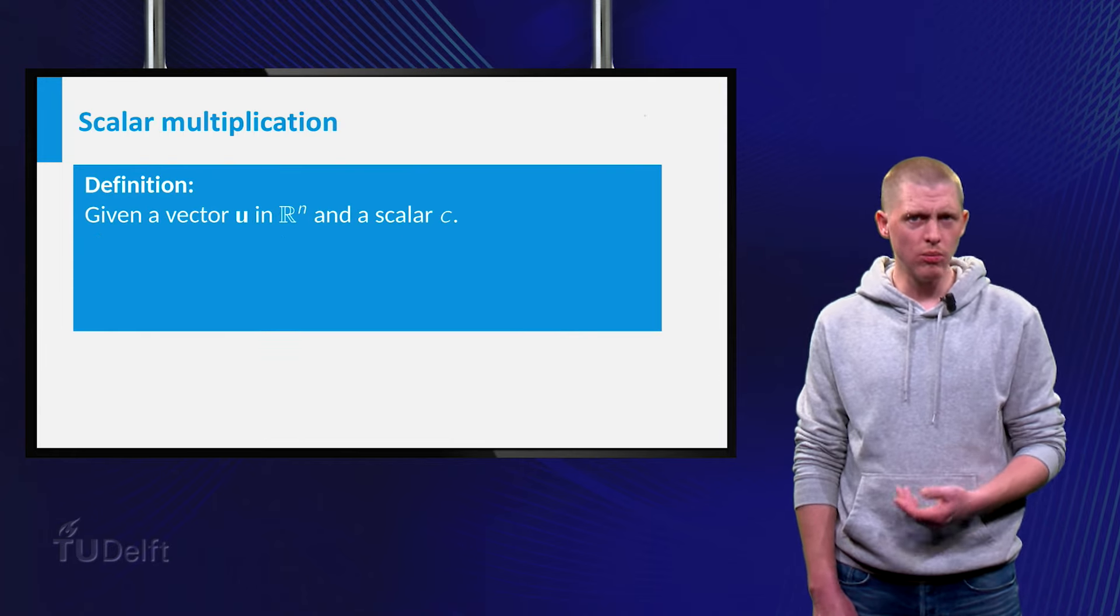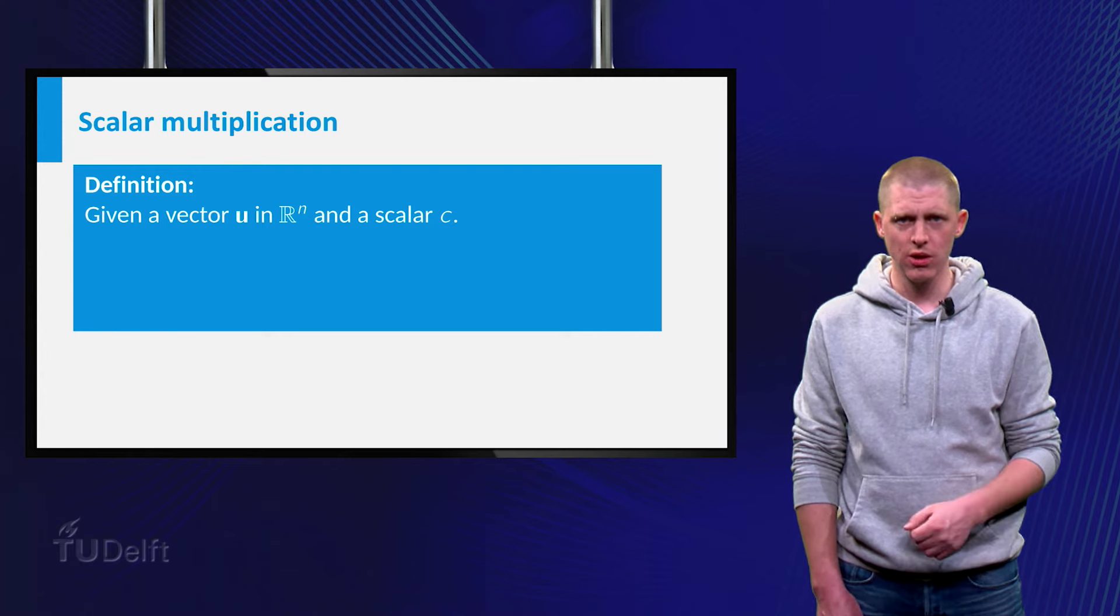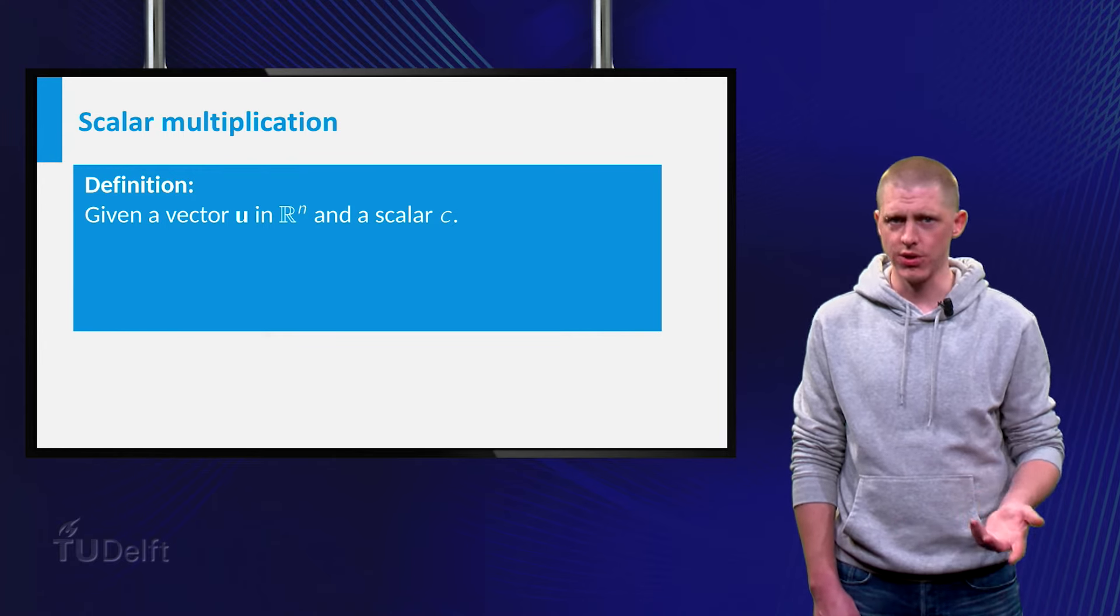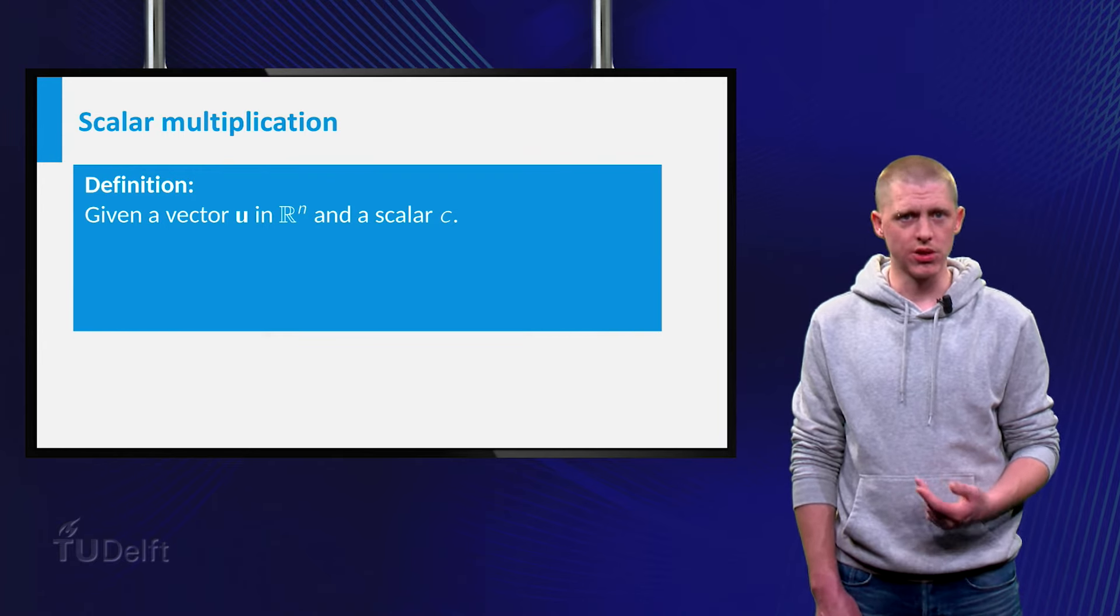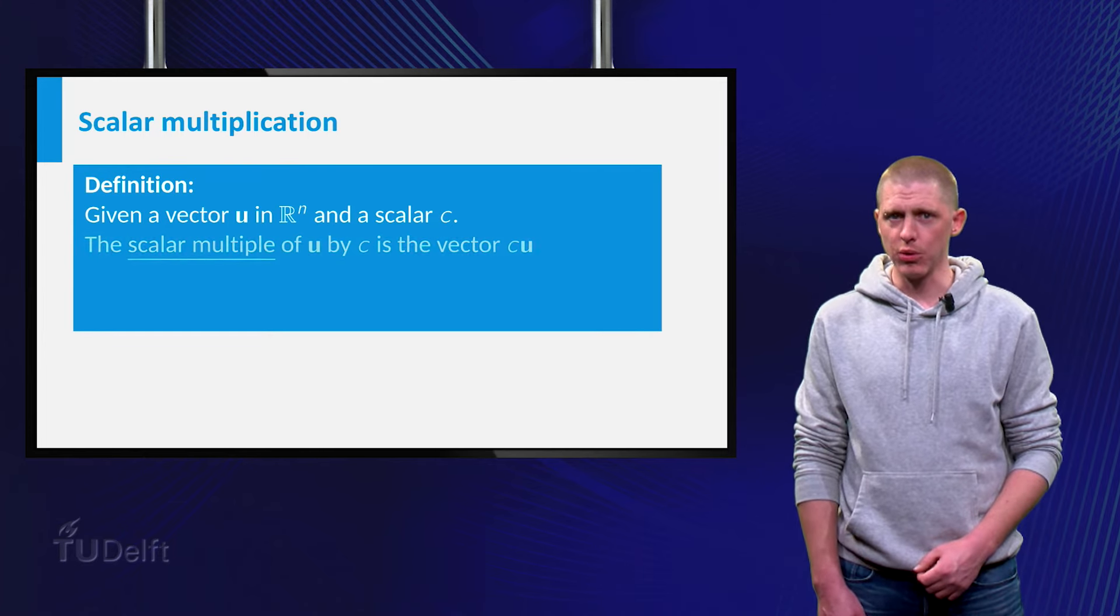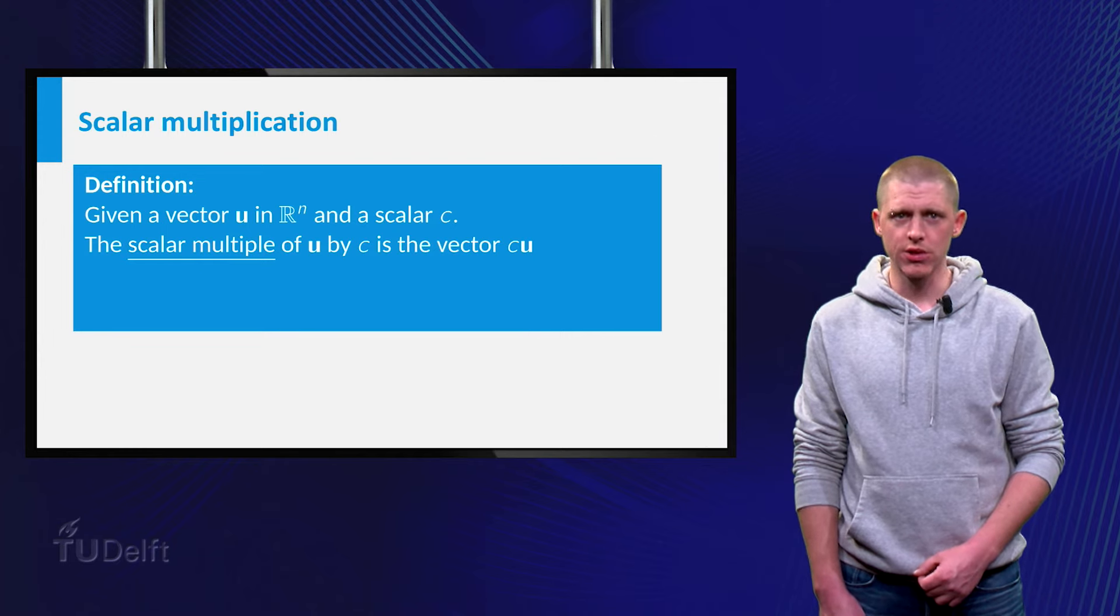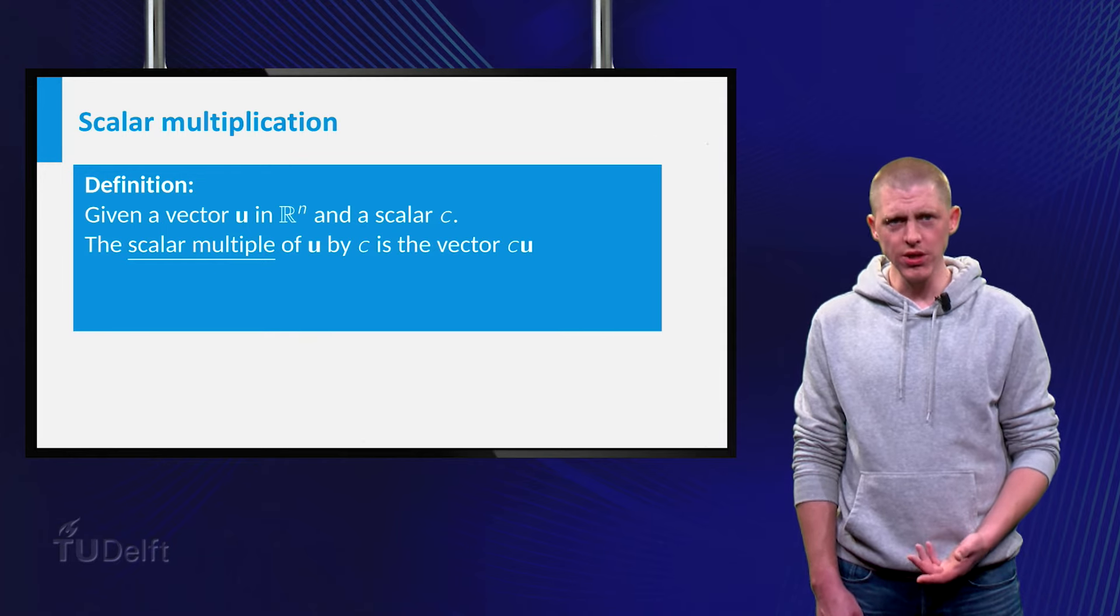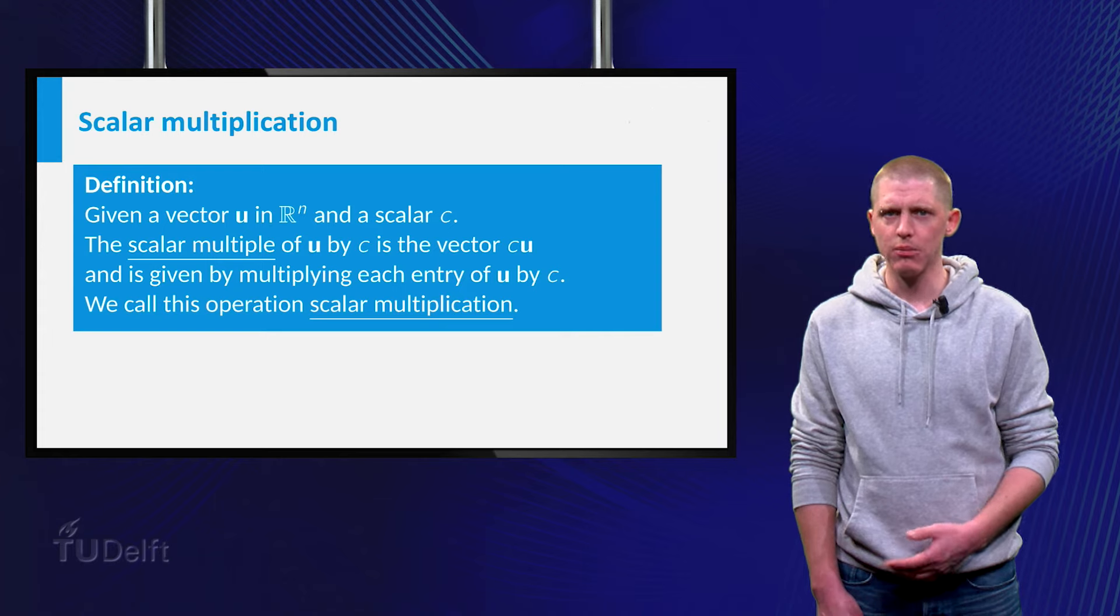You can also multiply a vector u by a scalar c, which is called scalar multiplication. Remember that the scalar is just a single number. The scalar multiple of u by c is the vector cu, where each entry of u has been multiplied by c.